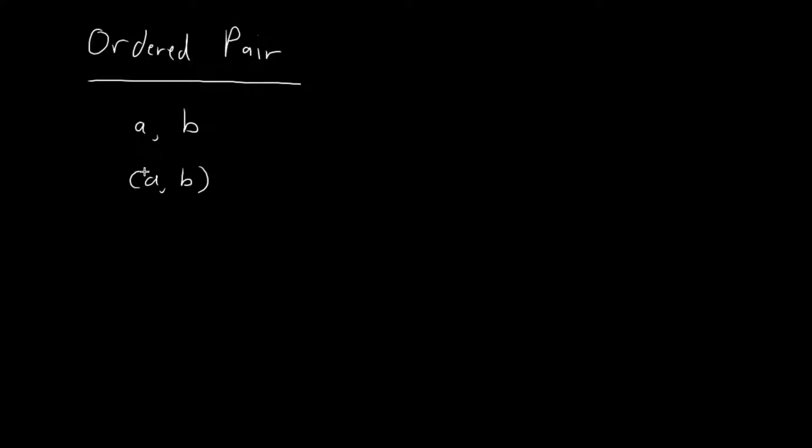For any two ordered pairs, let's say we have the ordered pair (A,B) and the ordered pair (C,D), these two ordered pairs are only considered equal if and only if A is equal to C and B is equal to D. With this definition,